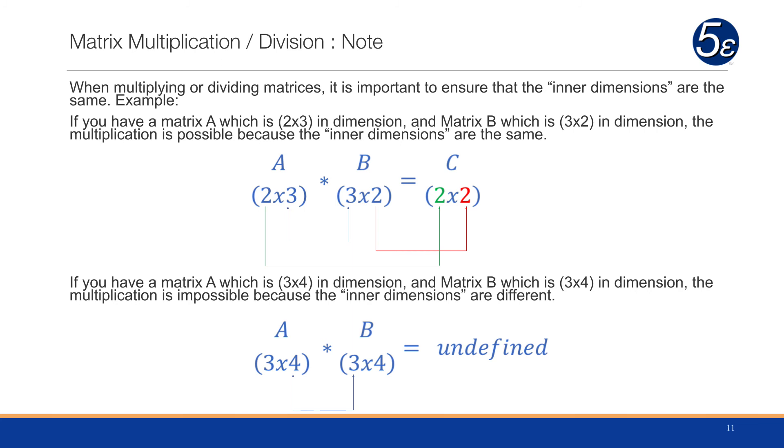When multiplying or dividing matrices, it's important to ensure the inner dimensions are the same. If you have matrix A, which is 2 by 3, and matrix B, which is 3 by 2, multiplication is possible because the inner dimensions are the same. The columns of the left matrix have to equal the number of rows in the right matrix. The resulting matrix will be 2 by 2. If matrix A is 3 by 4 and matrix B is 3 by 4, multiplication is not possible because the inner dimensions are different.